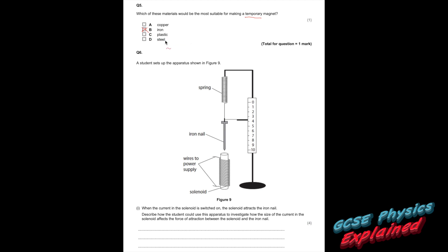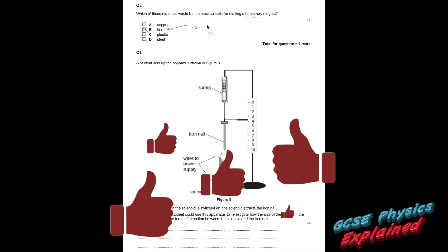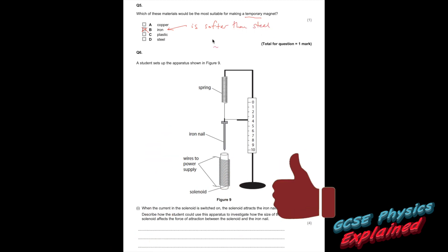Iron is much softer than steel. That's why you can magnetize it, and then demagnetize it. Steel is very hard. It becomes a permanent magnet.